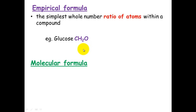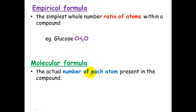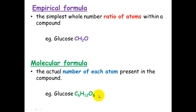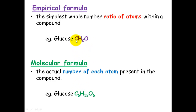In comparison, the molecular formula is the actual number of each atom present in the compound. Glucose's full molecular formula is C6H12O6. You can see that if you divide all of these numbers by 6, the simplest whole number ratio is 1 carbon, 2 hydrogens, and 1 oxygen: carbon divided by 6 is 1, hydrogen divided by 6 is 2, and oxygen divided by 6 is 1.